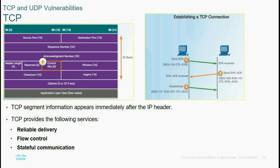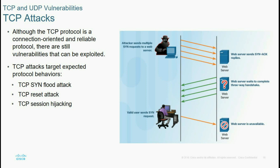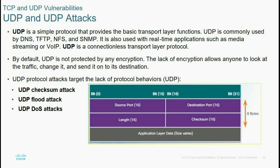TCP, or Transmission Control Protocol, is a reliable, connection-oriented protocol found in the transport layer. Although TCP is connection-oriented, there are state vulnerabilities that can be exploited in TCP attacks. The three main TCP attacks are: TCP SYN flood attacks, TCP reset attacks, and TCP session hijacking attacks — all occurring at the transport layer.